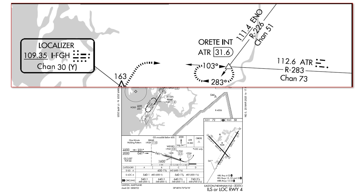These are some examples of rare or hard-to-spot items on approach plates that, once you know they're there, should be easier to catch. Keep training with us at Flight Insight with IFR Ground School and more at the link here and in the description.